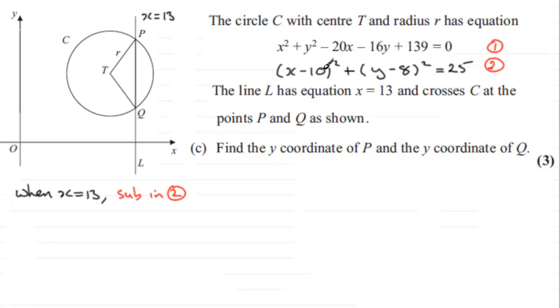...we've got 13 minus 10 here, which is going to be 3. So we've got 3 that is squared. Then we've got plus (y - 8)² equals 25.